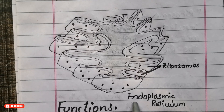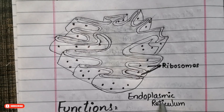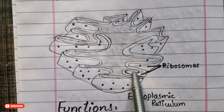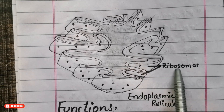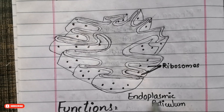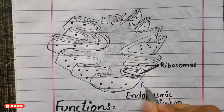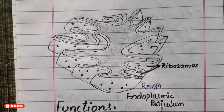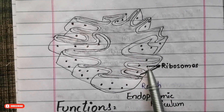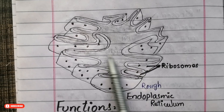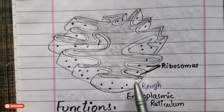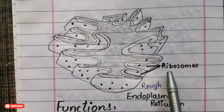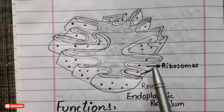These two types perform many important functions. The rough endoplasmic reticulum has ribosomes on its surface, which is why it is called the rough endoplasmic reticulum. As you can see in this diagram, the circular or bead-like structures scattered all over the surface of the endoplasmic reticulum are the ribosomes.